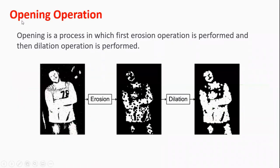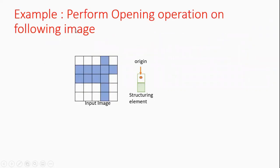So what is the opening operation? Opening operation is a process in which first erosion operation is performed and then dilation operation is performed. You can see here an example — this is the image in which first erosion is performed and then dilation is performed.